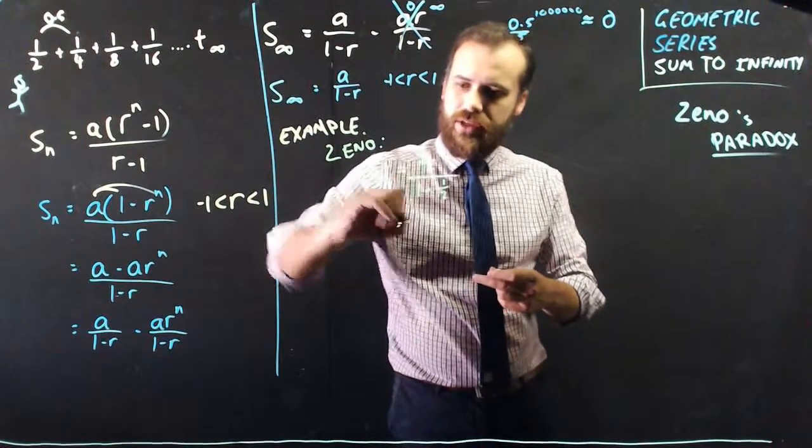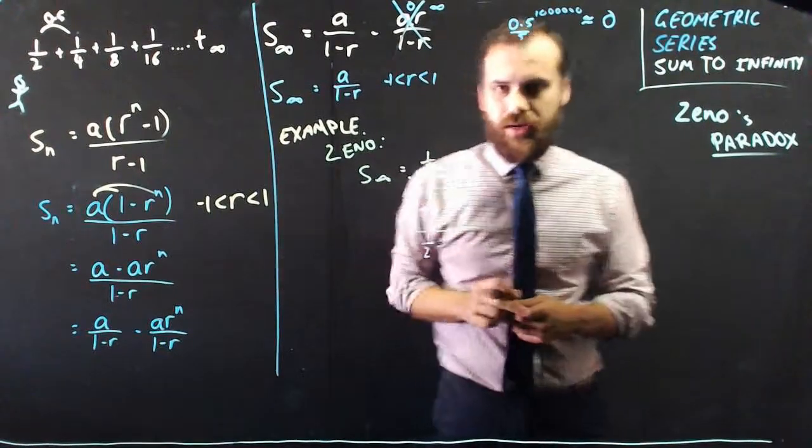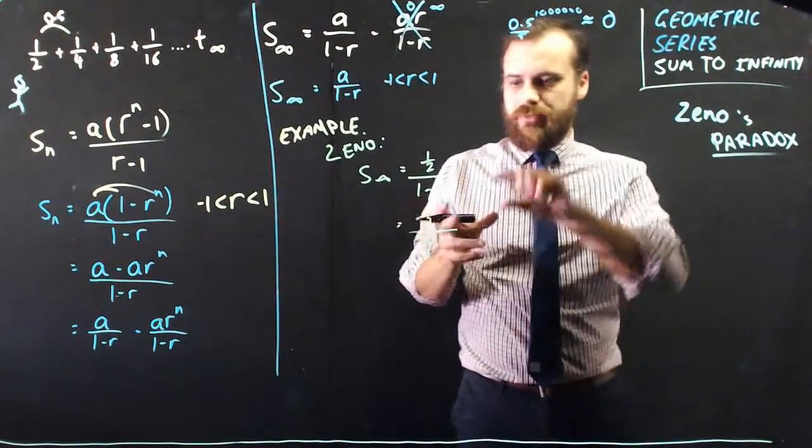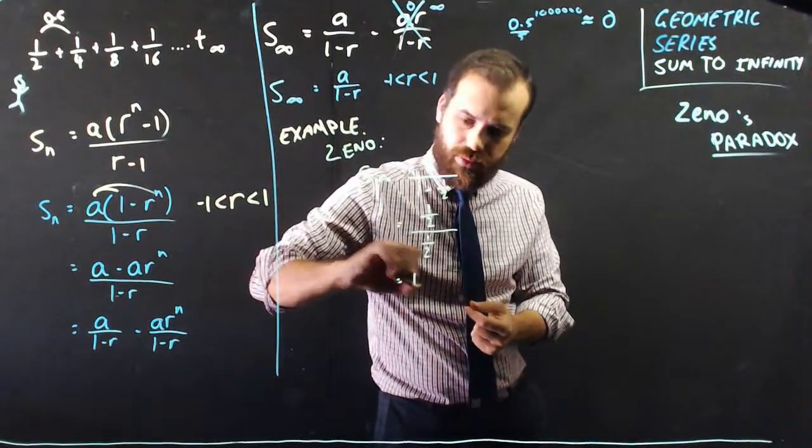So, what we have is 1 half divided by 1 half, which is the same as 1 half times 2, which is the same as 1.